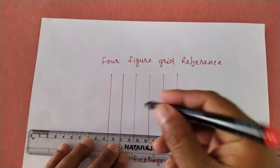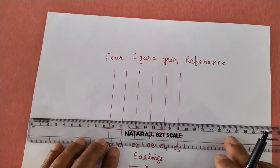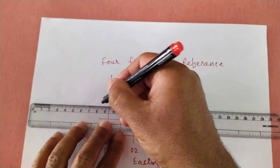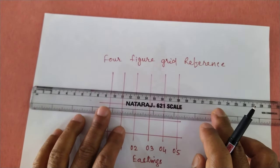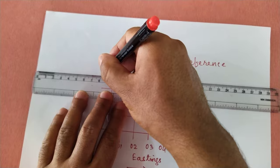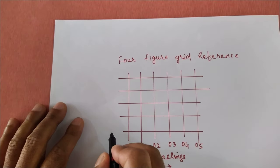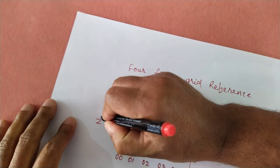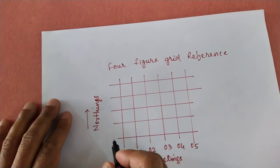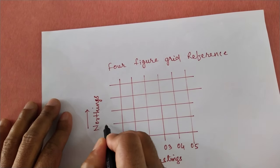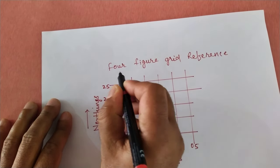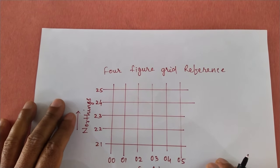The Northings are horizontal lines. The Northings are horizontal lines and they will be running from west to east, and they will be increasing towards the north side: 21, 22, 23, 24, 25.